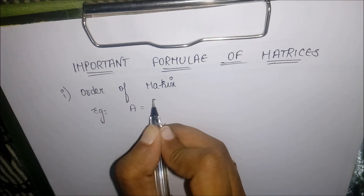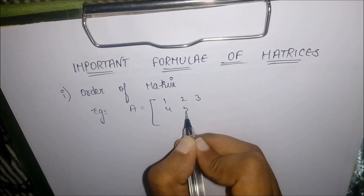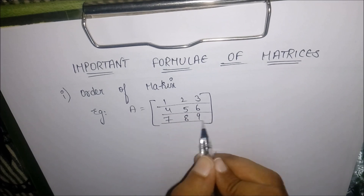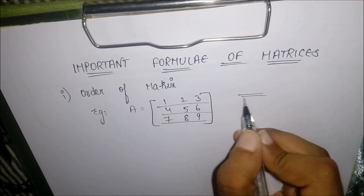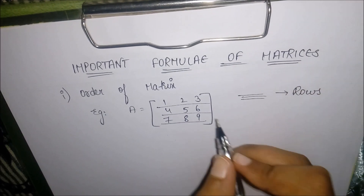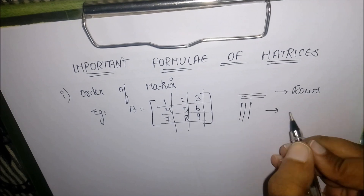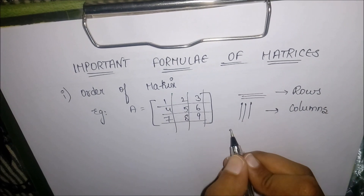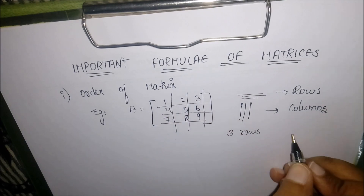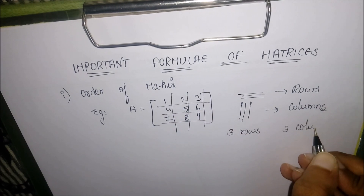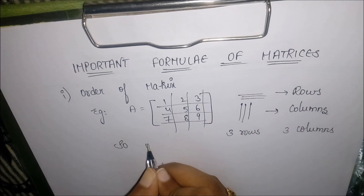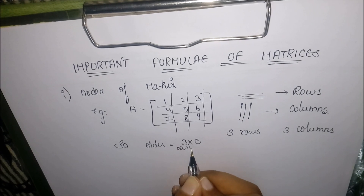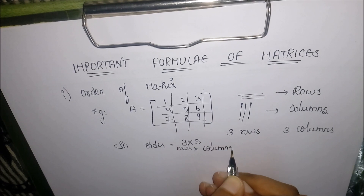Let us consider matrix A as given here. The horizontal lines in the matrix are called rows and the vertical elements are called columns. Here we have three rows and three columns, so the order of the matrix is three by three, that is rows by columns.